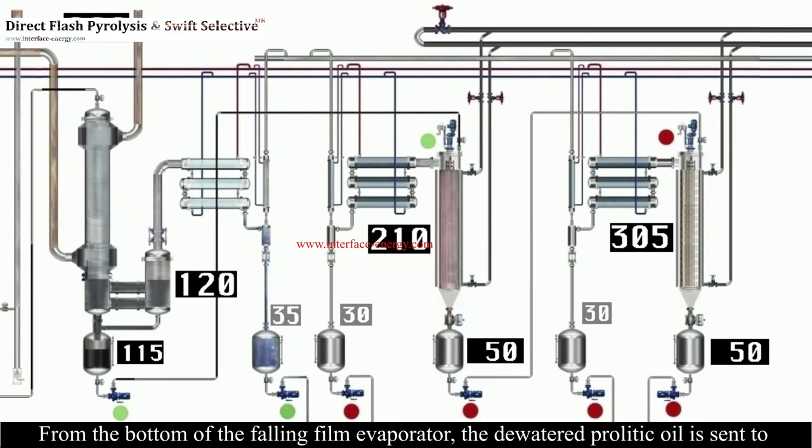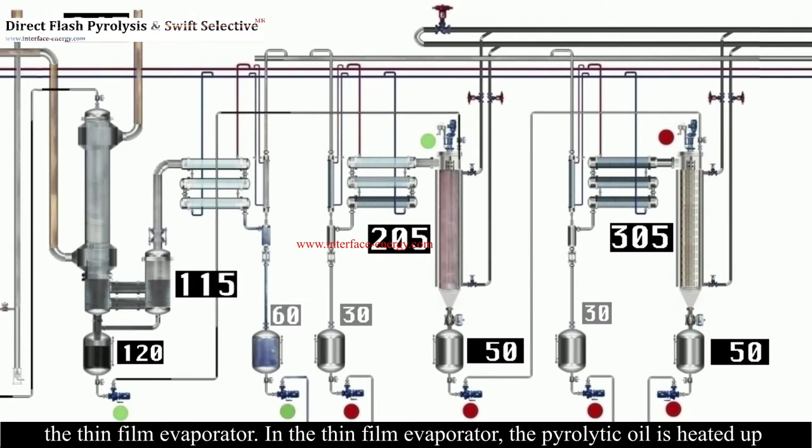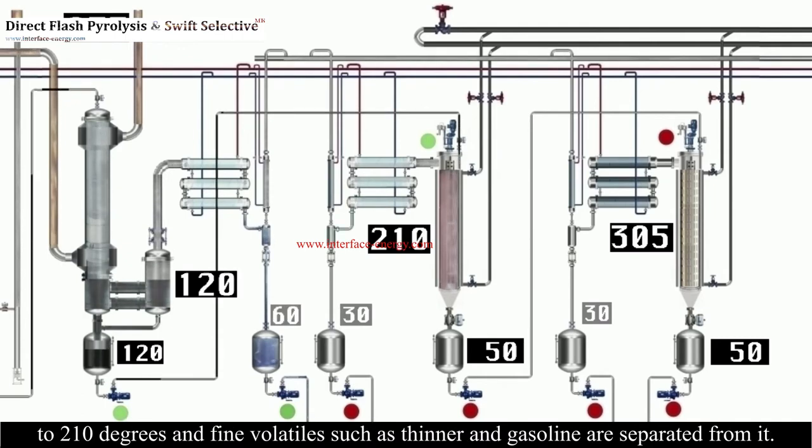From the bottom of the falling film evaporator, the dewatered pyrolytic oil is sent to the thin film evaporator. In the thin film evaporator, the pyrolytic oil is heated up to 210 degrees and fine volatiles such as thinner and gasoline are separated from it.